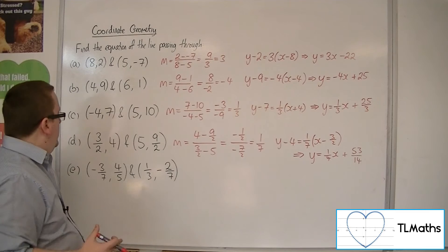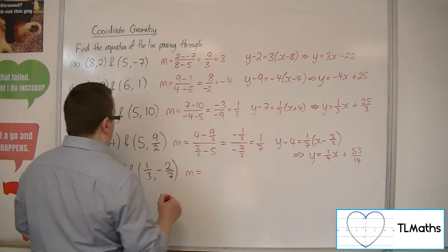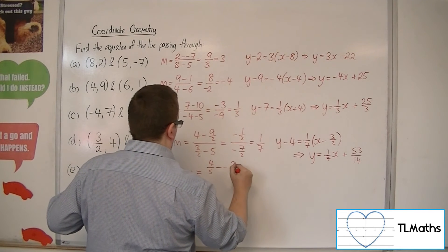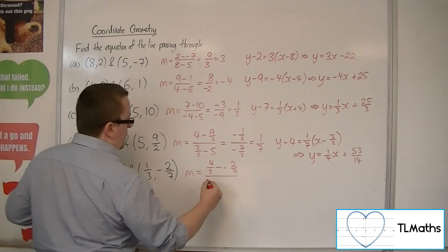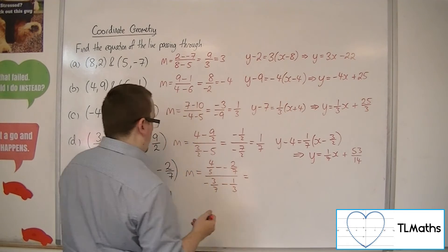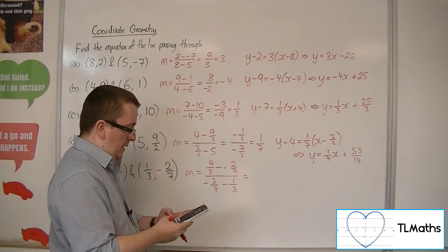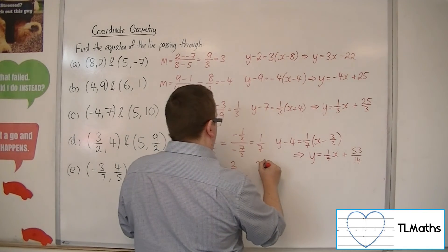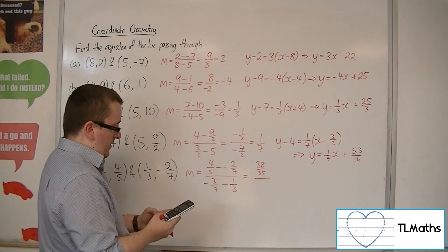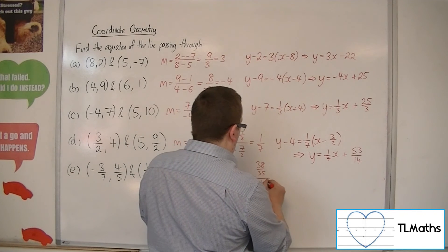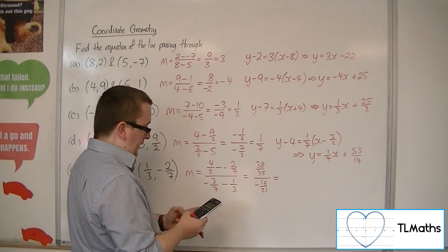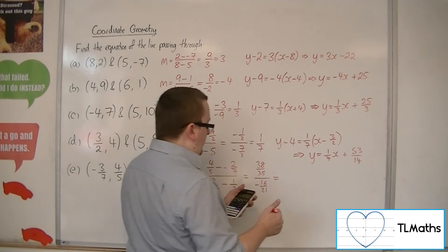Then lastly, here's e. So we've got the difference in the y-coordinates: 4 fifths take away minus 2 sevenths, over the difference in the x-coordinates: minus 3 sevenths take away 1 third. So the numerator, 4 fifths plus 2 sevenths, is 38 thirty-fifths. And in the denominator, minus 3 sevenths take away 1 third, which is minus 16 over 21. So 38 over 35 divided by minus 16 over 21 is minus 57 over 40.